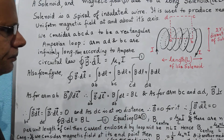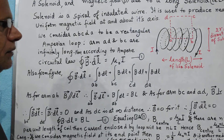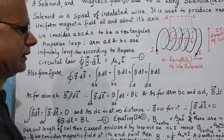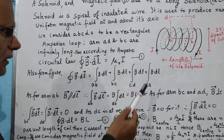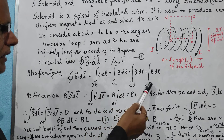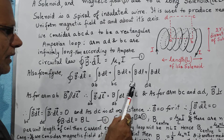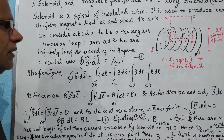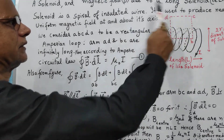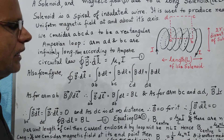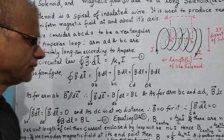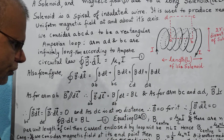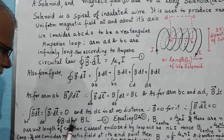For arms BC and AD, the magnetic field will always be perpendicular to these arms, and therefore they have a 90-degree relationship. The dot product becomes zero, so the integration for arm BC and arm DA both become zero. Now for arm CD, since it is taken to be at an infinitely large distance, the magnetic field at that location will be zero, and once the magnetic field is zero, B dot dL will become zero. Out of all four integrations, only the first one survives, equal to BL. Therefore, the integral of B dot dL equals BL.